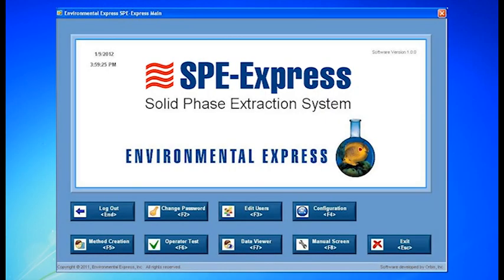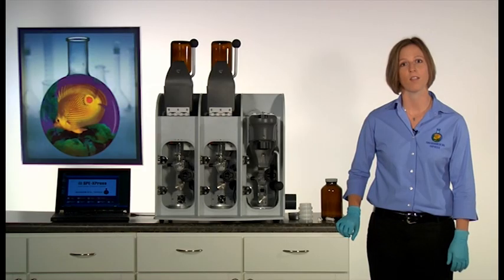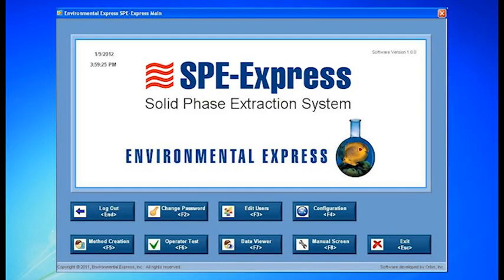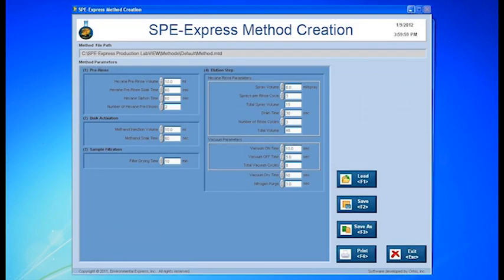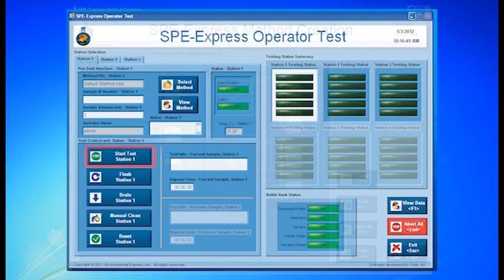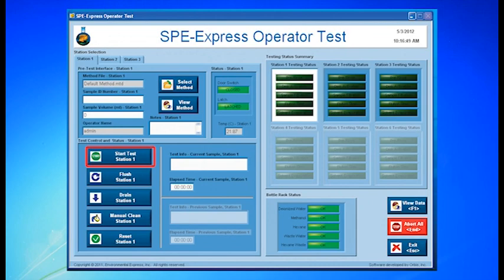Finally, user-friendly PC software guides us through the process and logs data for downloading to LIMS. Operating the SPE Express is easy and safe. The accompanying software walks the analyst through each step. Enter your sample ID and volume and select your test method from a number of pre-programmed options. Analysts can change different test parameters such as the amount of hexane used to elute your sample based on how dirty your sample is. Now click start test and the process begins.